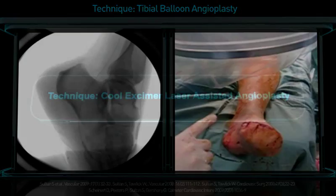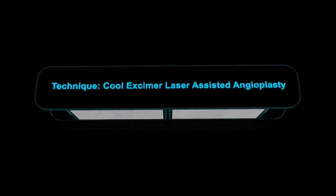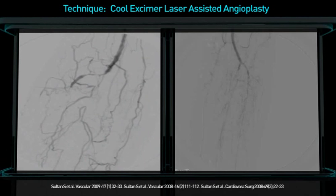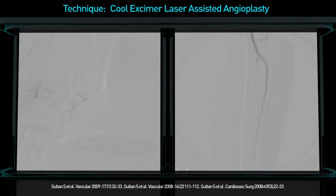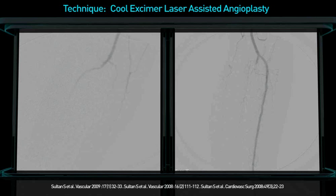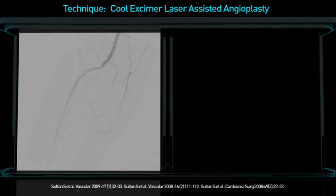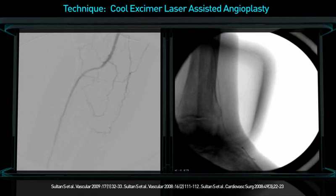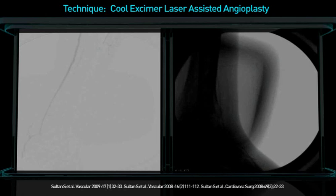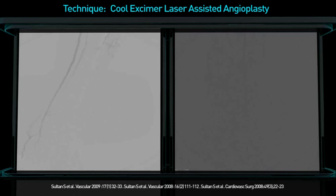Slow laser catheter advancement at a rate of 0.5mm per second is required to maximally ablate the target tissue, with saline infusion and multiple passes. Any attempt to rapidly advance the laser catheter defies the principles governing laser-induced plaque debulking and causes dilation rather than vaporizing the plaque.